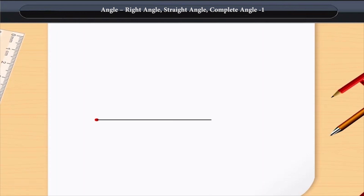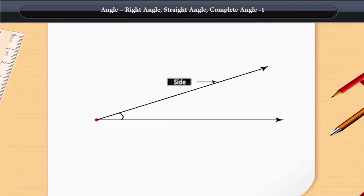Any angle can be formed by two rays, which are called the sides of the angle. These two rays forming an angle meet at a meeting point, which is called the vertex of the angle.